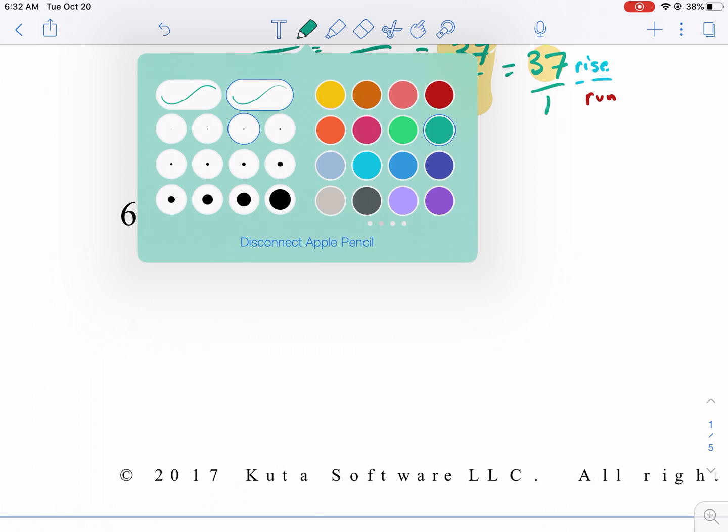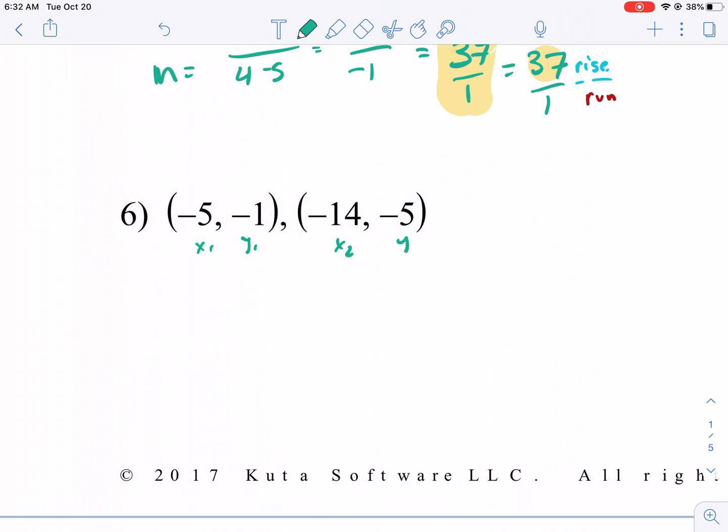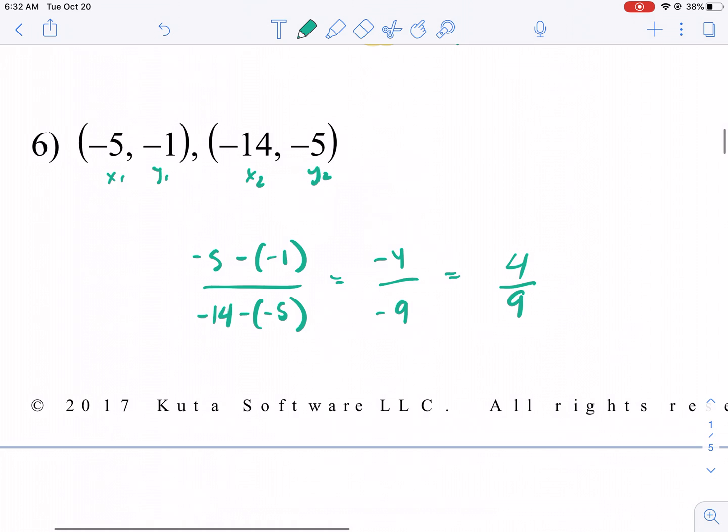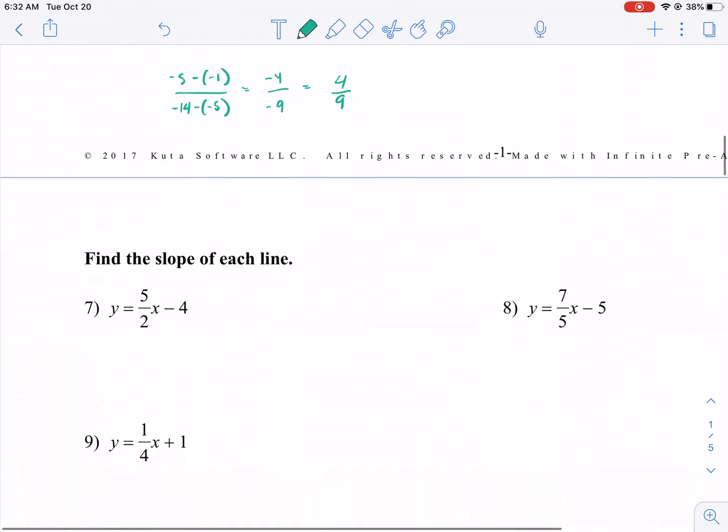We'll do another quick one. Make sure you label x1, y1, x2, y2. So we have negative five minus negative one, over negative 14 minus negative five. Now we have multiple negative signs, we need to add, so we get negative four on the top, and we get negative nine in the bottom, which gives us positive four over nine. We have a rise of four and a run of nine.